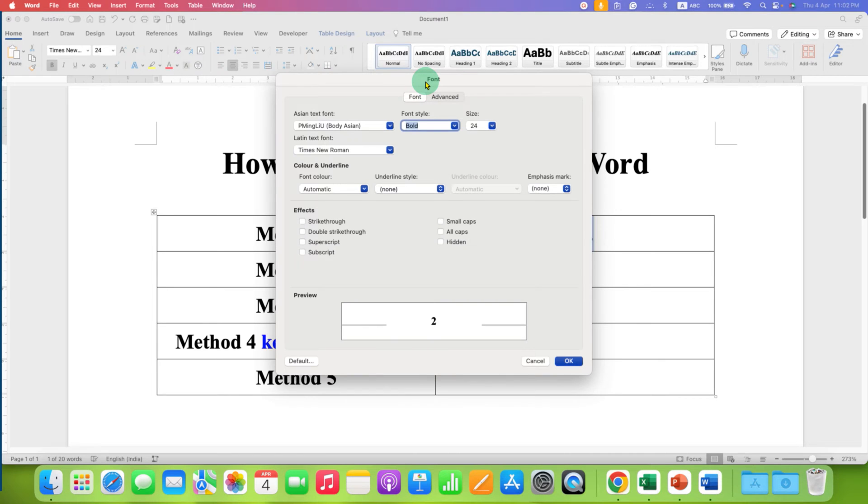In the fonts window, under effects, you will see the option of subscript. To make the small number 2 at the bottom, check the subscript box and then click OK.